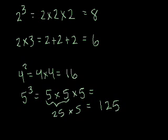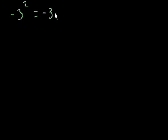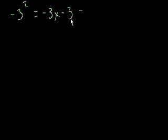Let's do some more. What happens if I have negative 3 to the second power? Well, let's just think it through. That equals negative 3 times negative 3. And what's a negative times a negative? It's a positive. So that equals positive 9.